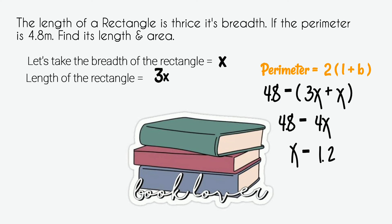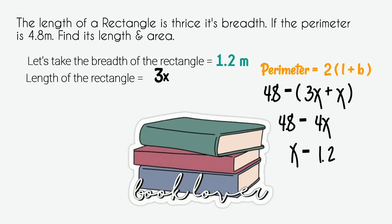Simplifying, 3x plus x is 4x. We divide 4.8 by 4 and get x equals 1.2. Since x is the breadth, the breadth is 1.2 meters. The length is 3x, so we multiply 1.2 by 3 and get 3.6 meters as the length of the rectangle.